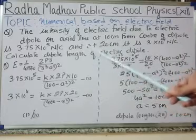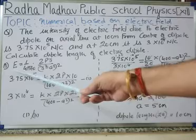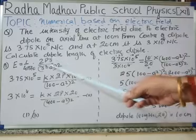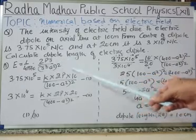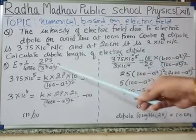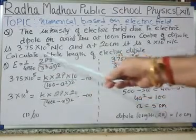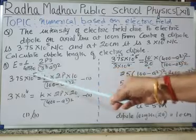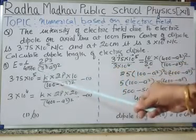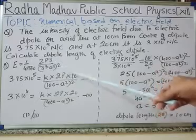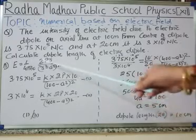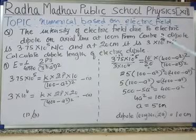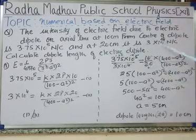The formula for electric field on the axial line is E = (1 / 4πε₀) × (2PR) / (R² − A²)². For the first case, R is 10 centimeters and the electric field is 3.75 × 10⁵. Substituting: 3.75 × 10⁵ = K × 2P × 10 / (100 − A²)², where K is the constant and P is the dipole moment.